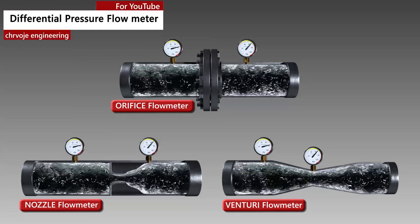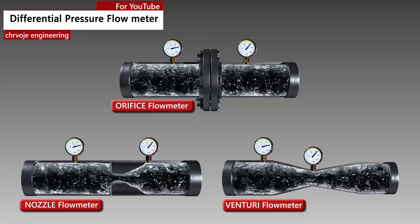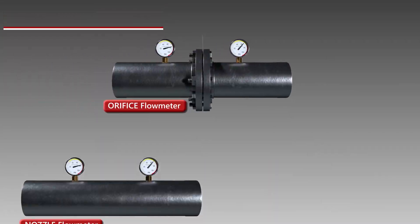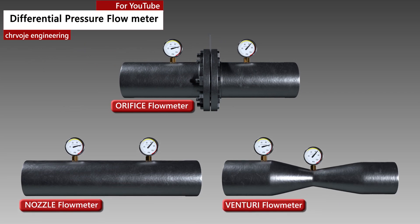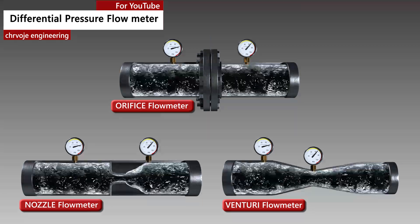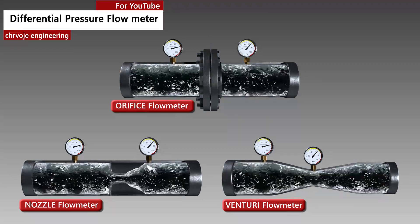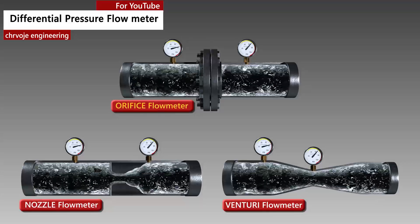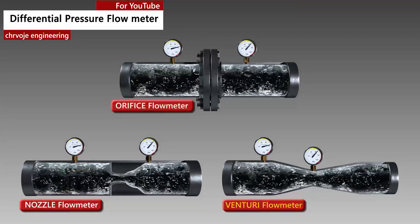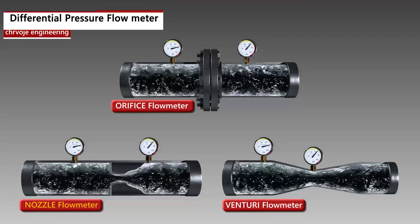Hi, and welcome back to the Sea Havoya Engineering Channel. The differential flow meter is the most common device for measuring fluid flow through pipes. Flow rates and pressure differential of fluids such as gases, vapors, and liquids can be measured with an orifice plate flow meter, venturi tube flow, or nozzle flow meter.